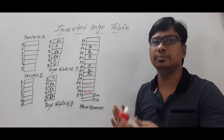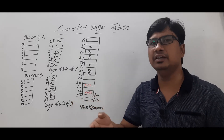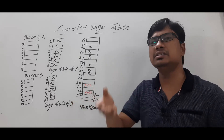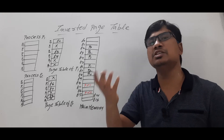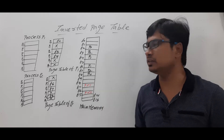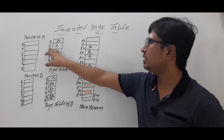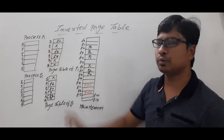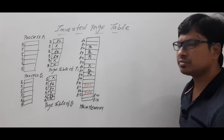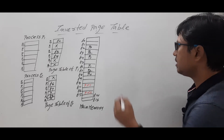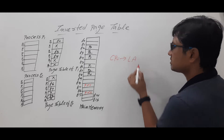We have a valid or invalid bit. Valid means the page is available in main memory; invalid means the page is not available in main memory. For example, page number one is marked invalid — represented with a cross symbol — because it is not currently in main memory. The CPU generates a logical address to access pages.